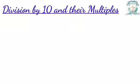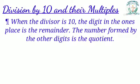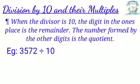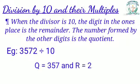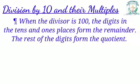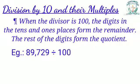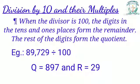Division by 10 and their multiples. When the divisor is 10, the digit in the 1's place is the remainder and the number formed by the other digits is the quotient. For example, 3572 divided by 10: since 10 has one zero, the digit in the 1's place becomes the remainder and the remaining digits form the quotient. When the divisor is 100, the digits in the 10's and 1's places form the remainder and the rest form the quotient. For example, 89,729 divided by 100: 29 is the remainder and 897 is the quotient.